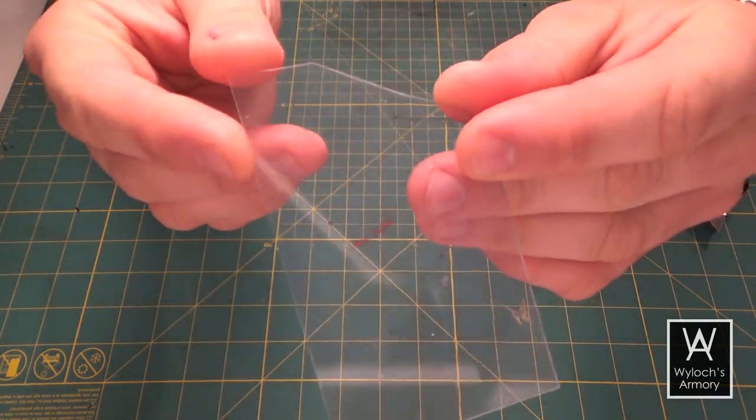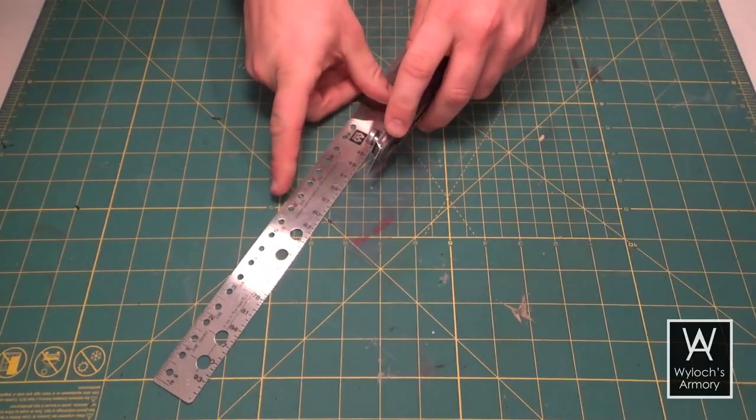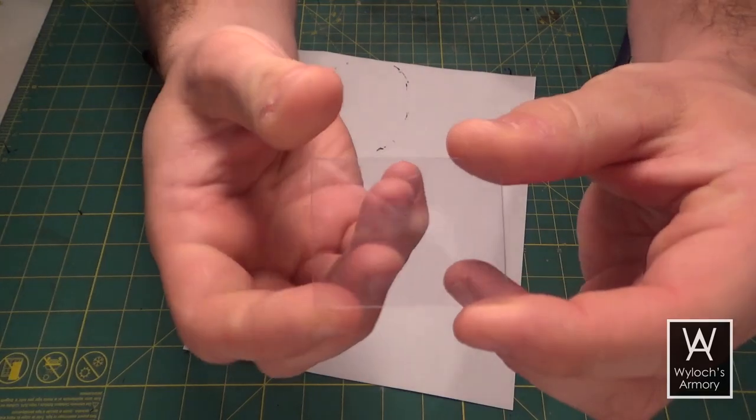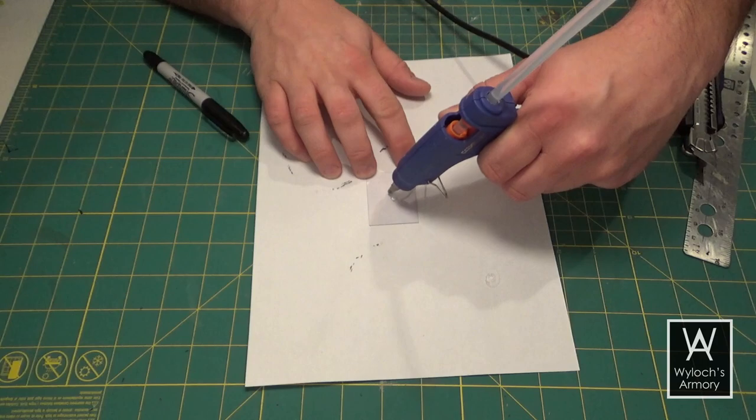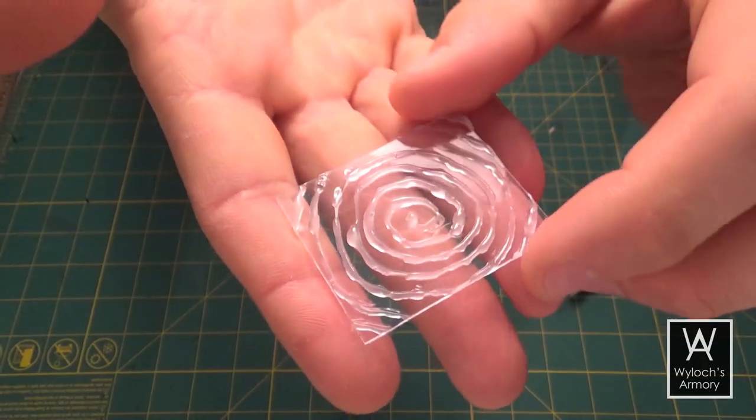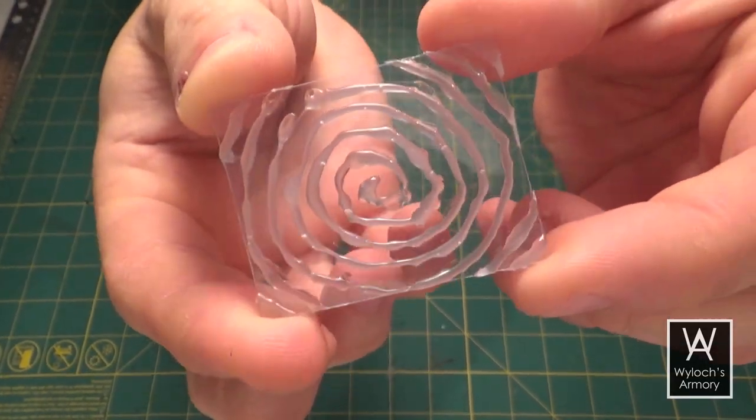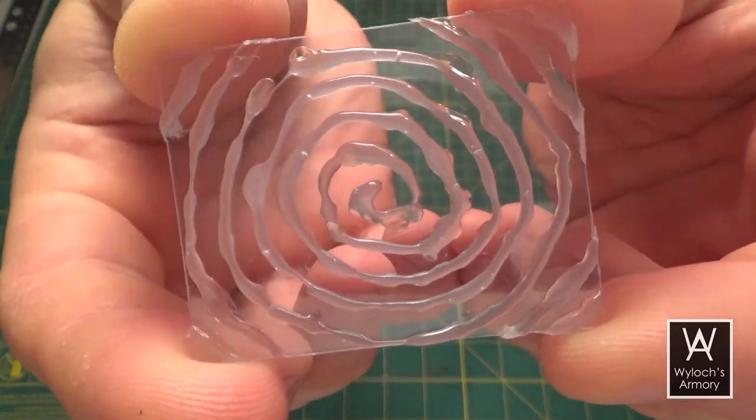Now from some clear plastic that came from some kind of package, I cut out a rectangle one and a half inches wide by one and three quarters of an inch tall, and apply a swirl of hot glue to it and set that aside for now.